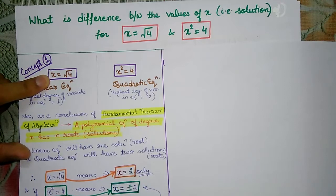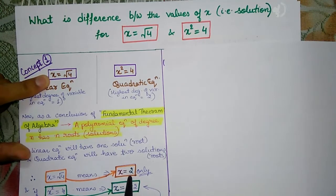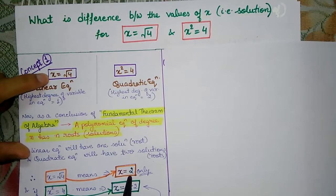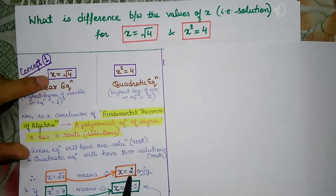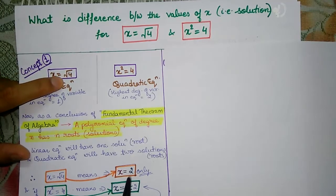And that only one solution is x is equal to 2. x is equal to root 4 gives only 2.